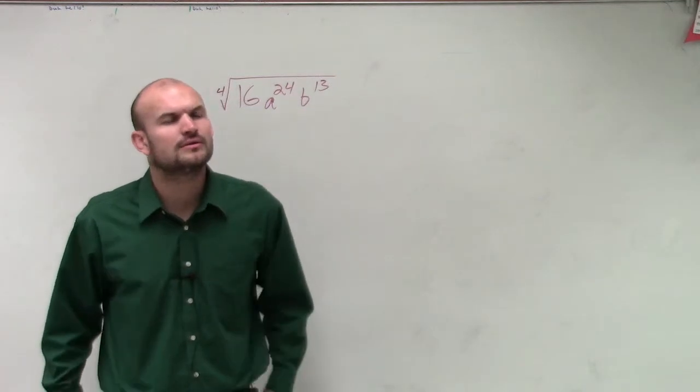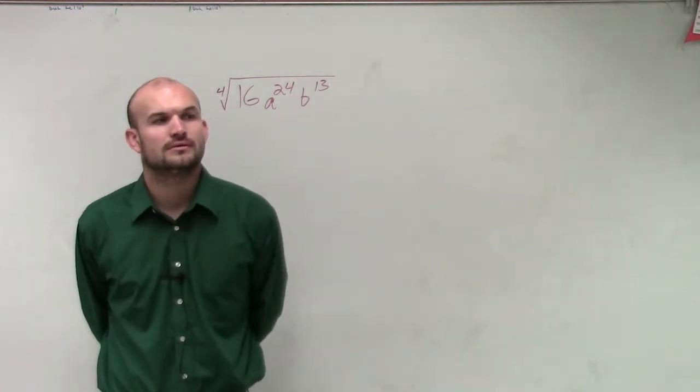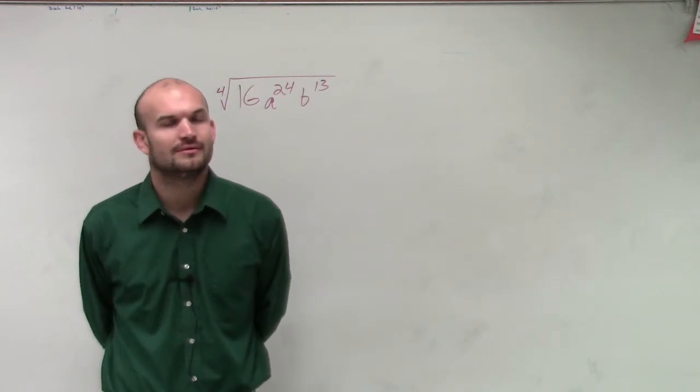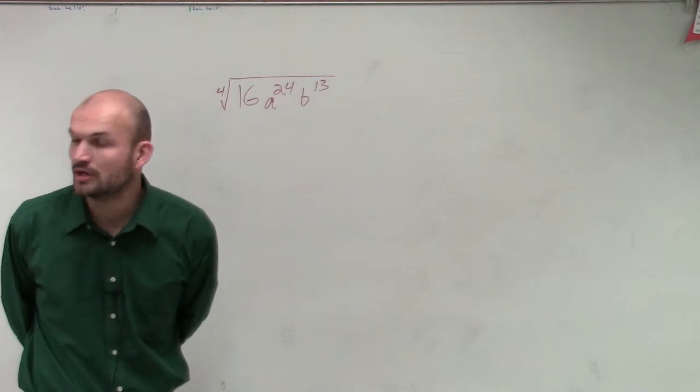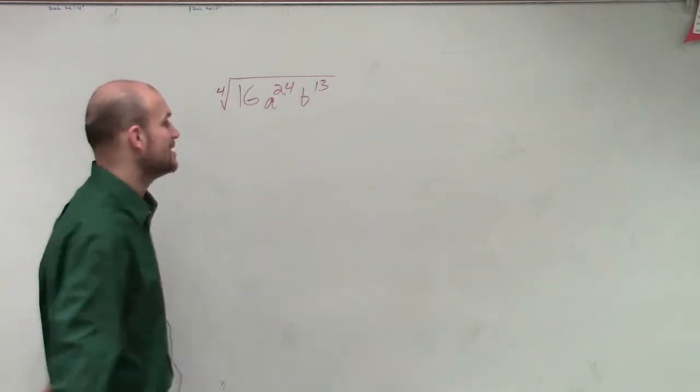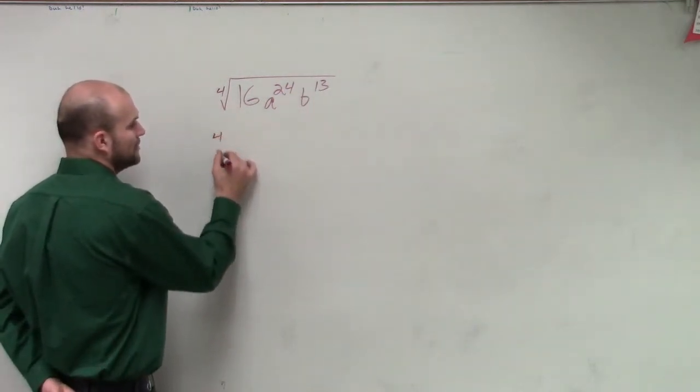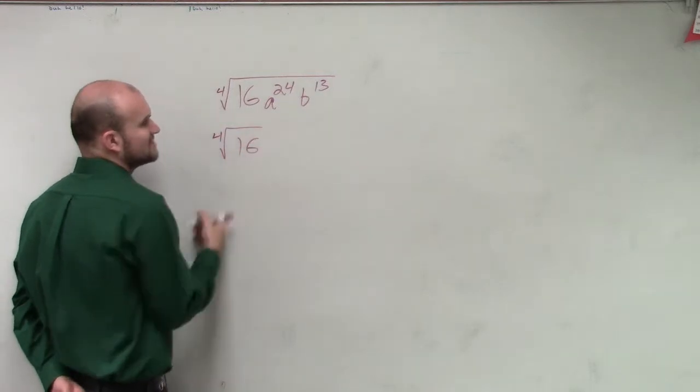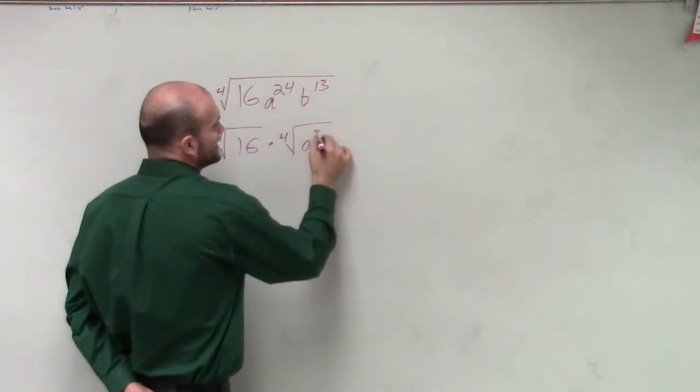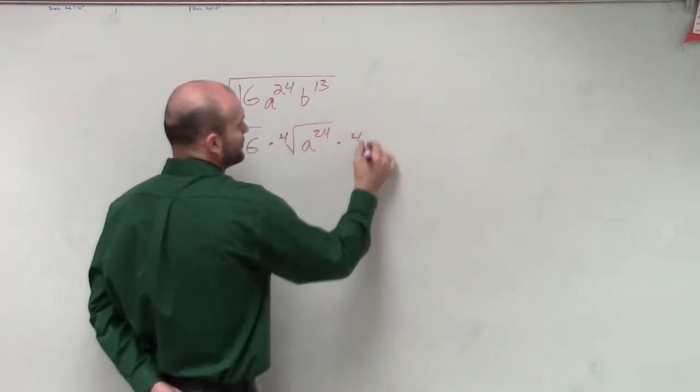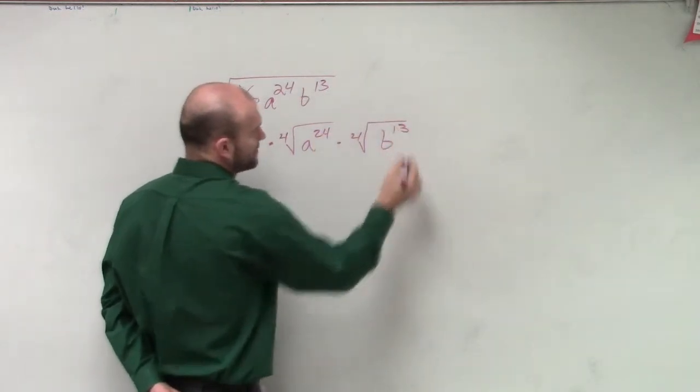First thing we're going to want to do is break it up by applying the product rule of your radicals. So by applying that rule, I'm gonna have the fourth root of 16 times the fourth root of a to the 24th times the fourth root of b to the 13th.